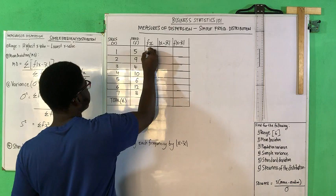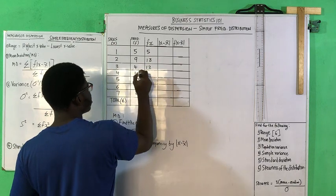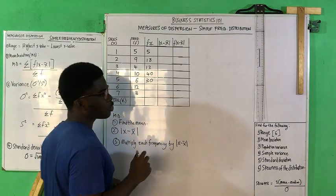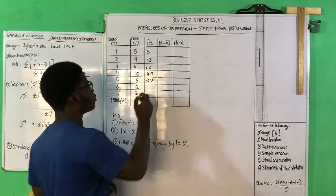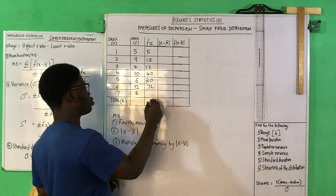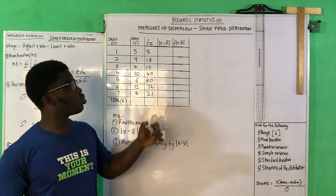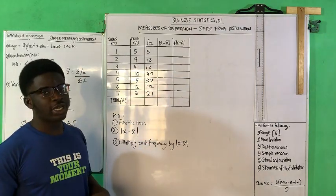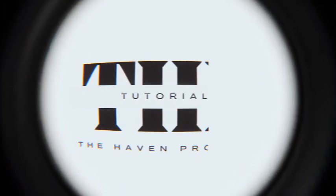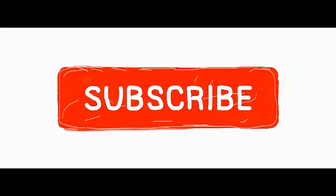Now let's fill in the fx column. One times 5 equals 5; two times 9 equals 18; three times 4 equals 12; four times 10 equals 40; five times 6 equals 30; six times 12 equals 72; seven times 3 equals 21. The total sigma f gives us 49.